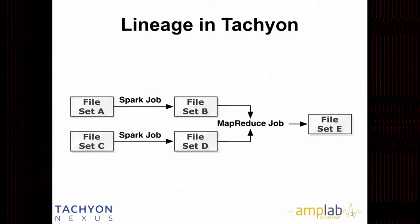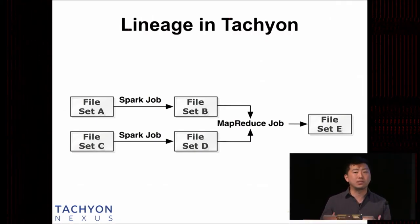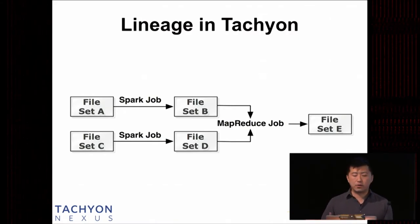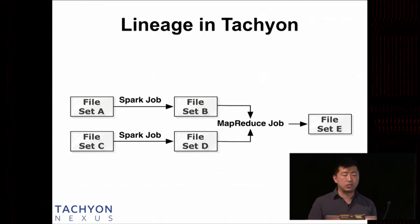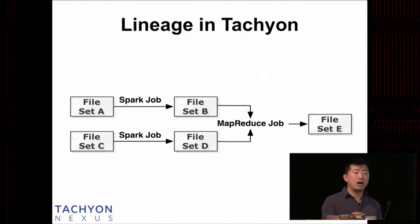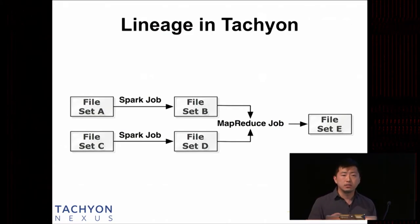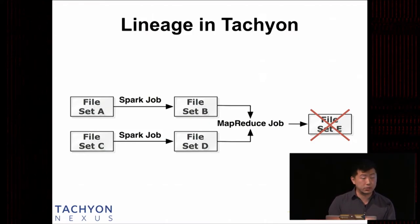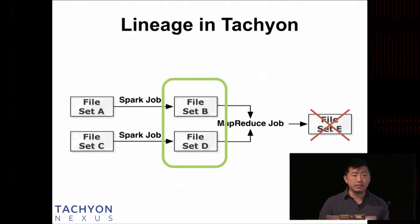The lineage concept in Tachyon describes relationships among different files or data. For example: a Spark job reads file set A and generates file set B; another reads file set C and generates file set D; then a MapReduce job reads B and D and generates E. Tachyon remembers this information reliably. When a job writes data into Tachyon, it only needs to write one single copy at memory speed — Tachyon guarantees fault tolerance. If file set E gets lost, Tachyon can launch the necessary recomputation to recover the data.